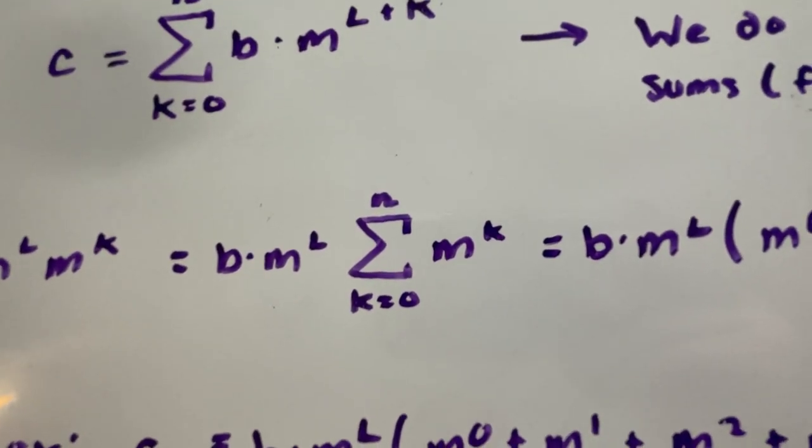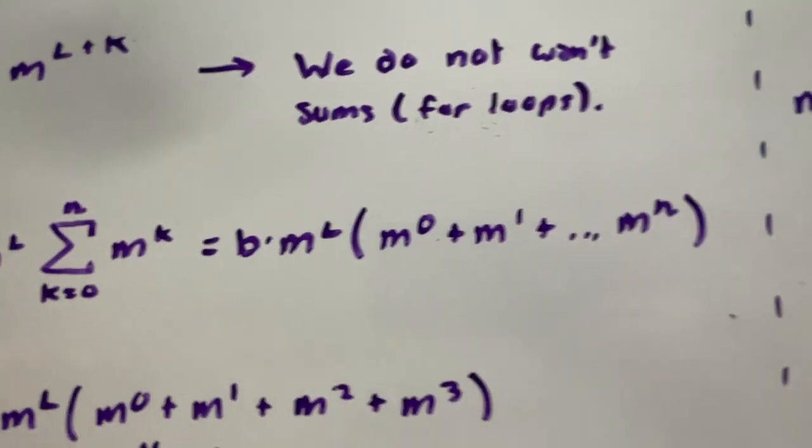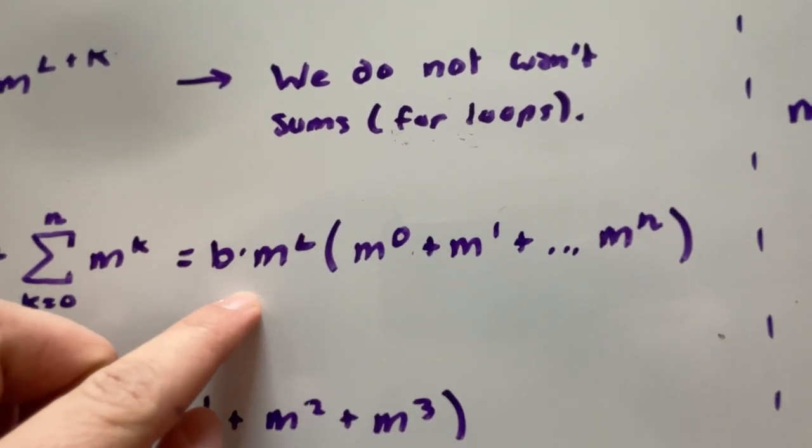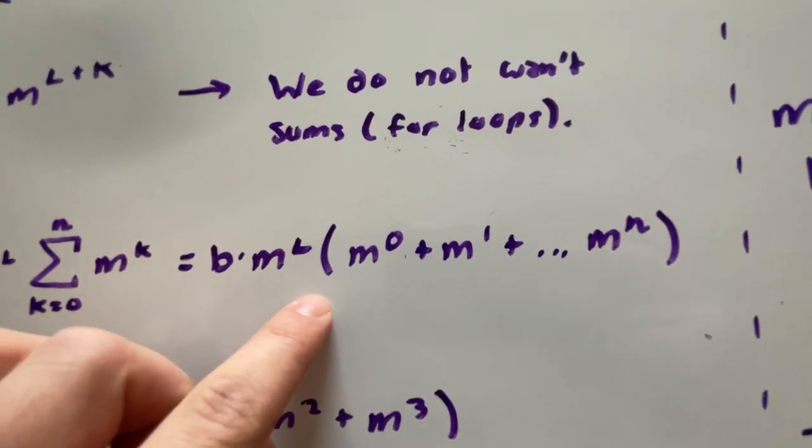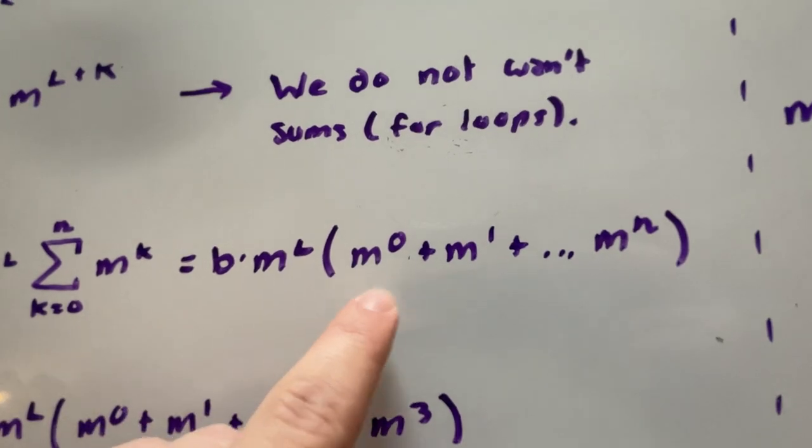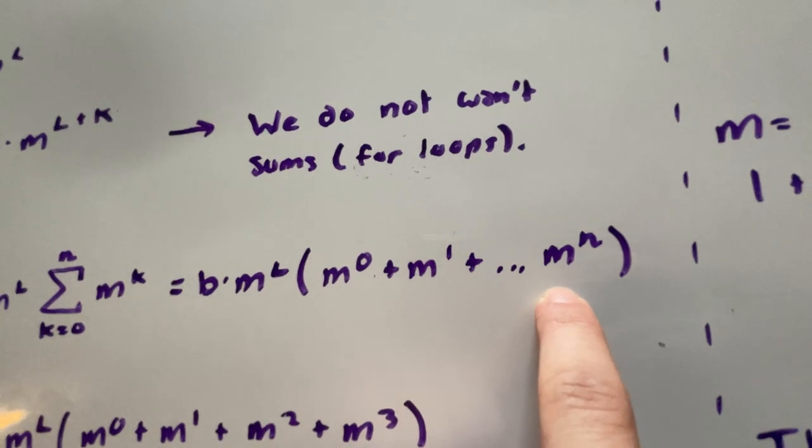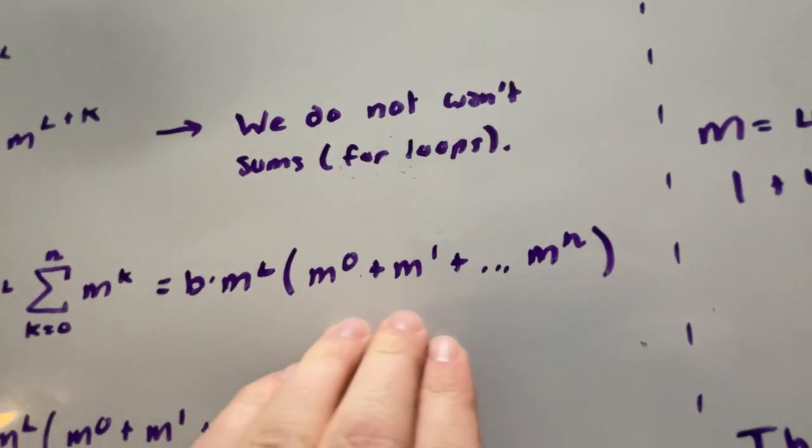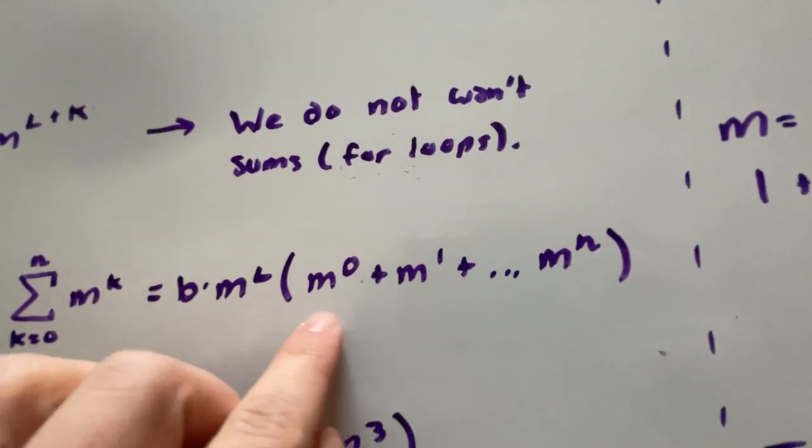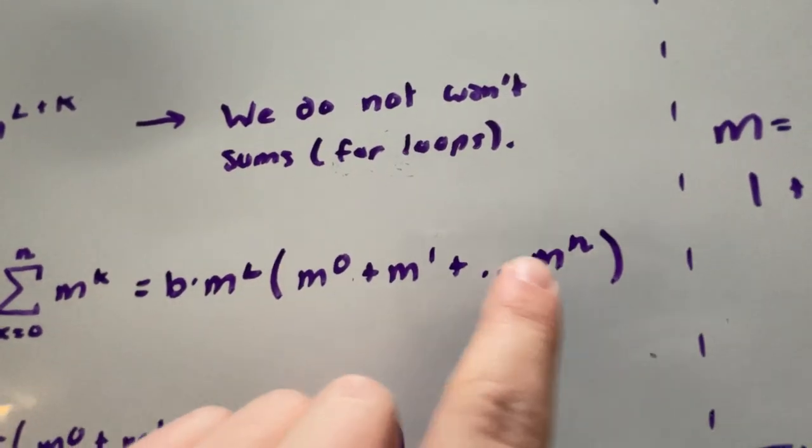If we were to expand this sum, you can see it looks something like this: it's b times m to the power of l, all that times m to the power of zero plus m to the power of one and so on all the way up to m to the power of n. This is what I meant by sum. We're taking the sum of all of these based on whatever n is.